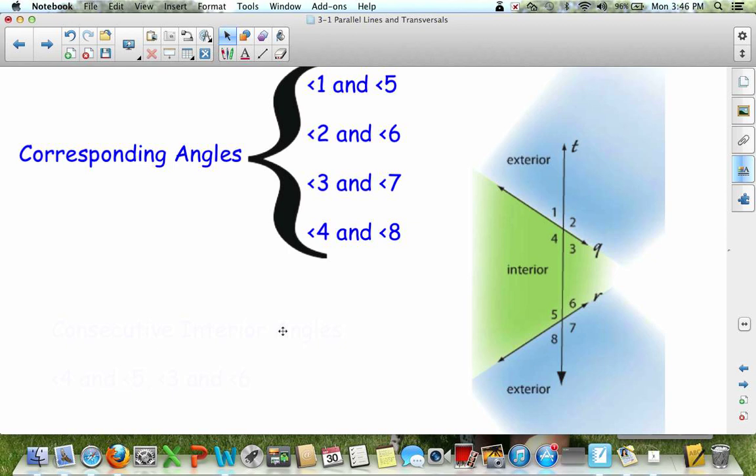Another word you'll need to know are consecutive interior angles. Again, this is in your packet. 4 and 5 are consecutive interior because they're on the same side of the transversal. And 3 and 6 are consecutive interior angles.